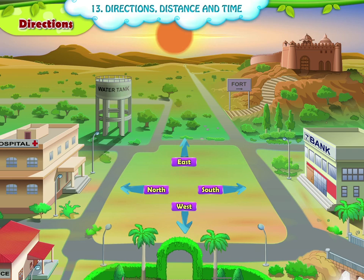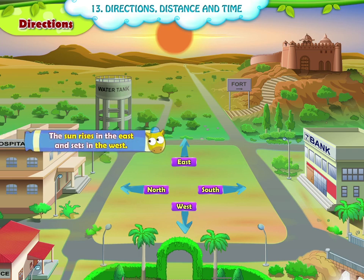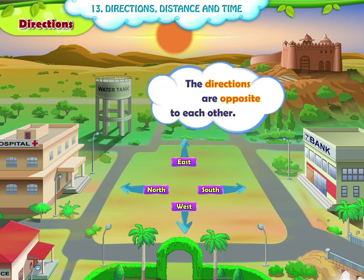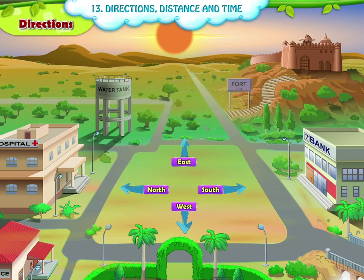Directions. We have four directions: North, South, East and West. The sun rises in the east and sets in the west. The directions are opposite to each other. The east is opposite to the west, and north is opposite to south.